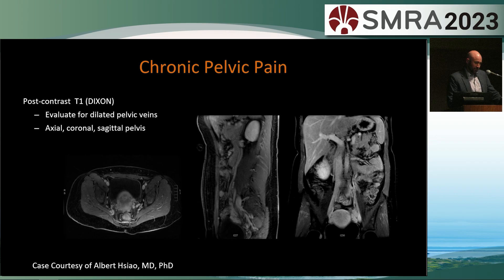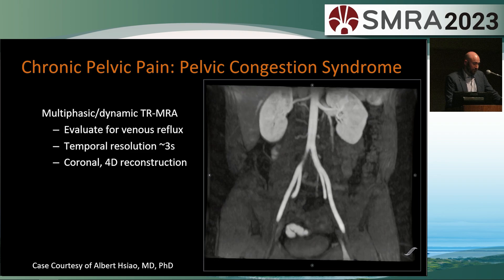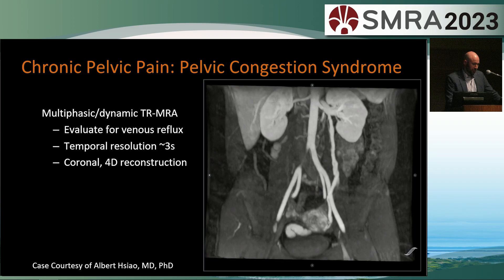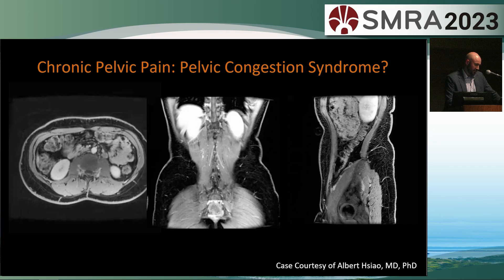A case from Albert Sal at UCSD: a patient with chronic pelvic pain. Axial, sagittal, and coronal delayed phase post-contrast images show pelvic varicosities, an enlarged ovarian vein coming down to the varicosities on the left, and an enlarged right-sided ovarian vein. In a patient with chronic pelvic pain, you want to determine whether there's a connection between pelvic varices and the left renal vein. This image nicely shows retrograde flow in the left ovarian vein going down to the pelvis, supportive of pelvic congestion syndrome, which can be treated with coil embolization in IR.